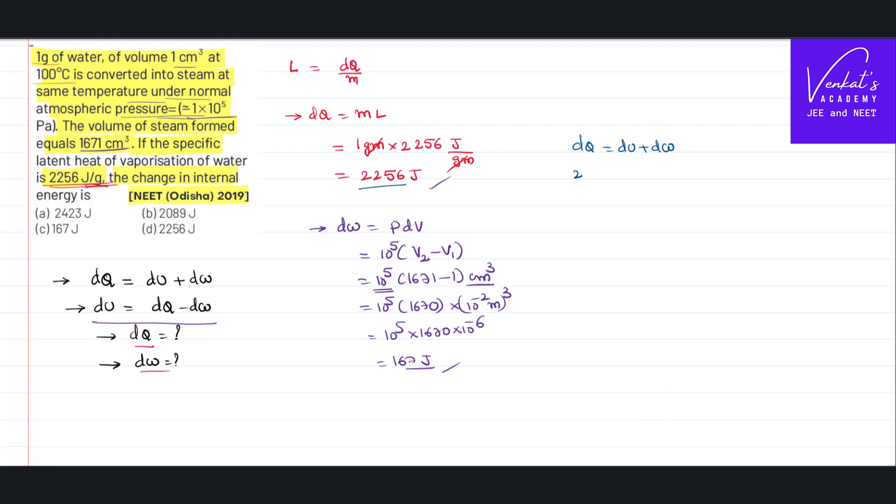dQ we found it as 2256. dU we have to find out. dW is 167. That implies change in internal energy is 2256 minus 167. So it is obvious that the answer is 2089. That is how we get to the answer.